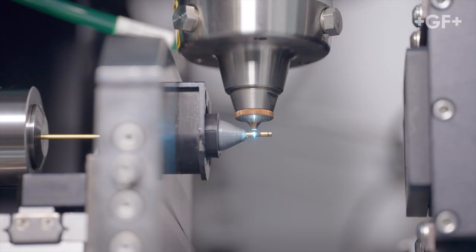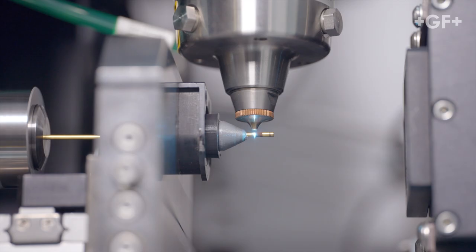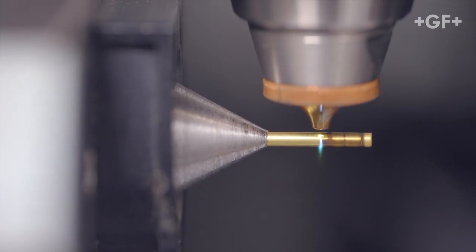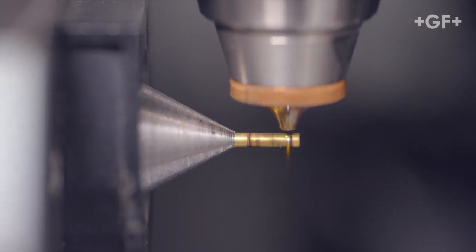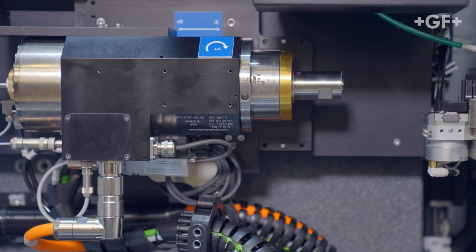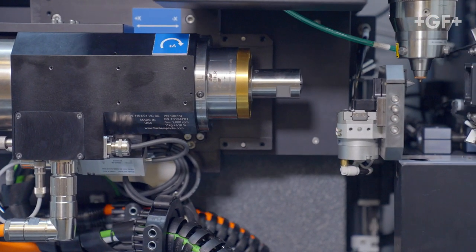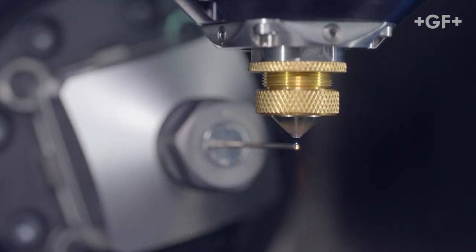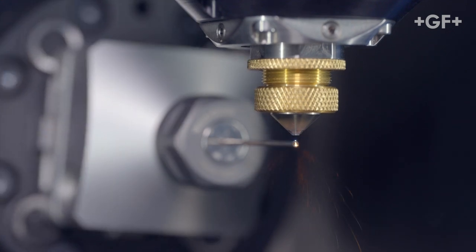Laser micromachining employs ultra-short pulse lasers to produce complex forms on a variety of difficult materials at a micron scale, with no tool wear, no heat affected zone, and with minimal or no burrs. Our Microlution laser micromachining platforms are constructed around a granite-based core.